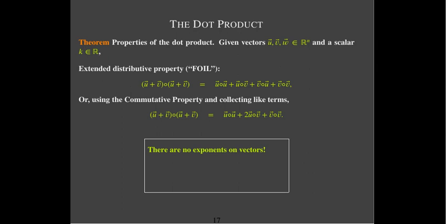An important note: there should never be an exponent on a vector — it simply makes no sense at all. If you write a vector and then put 'squared,' that is completely meaningless and will be penalized. In particular, that is not a shorthand for saying u dotted with u. If you want to say u dotted with u, write it out, or replace it with the length of u squared. The length of u is a scalar, and of course you can put exponents on scalars.